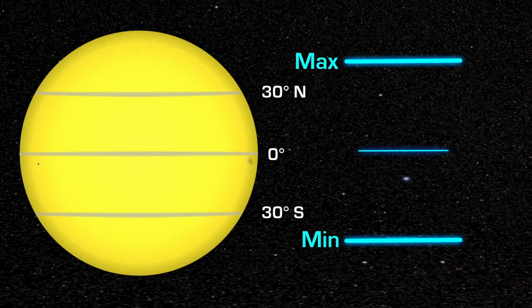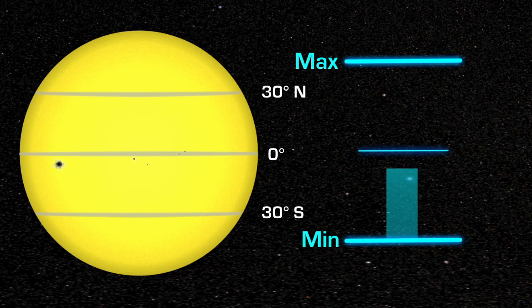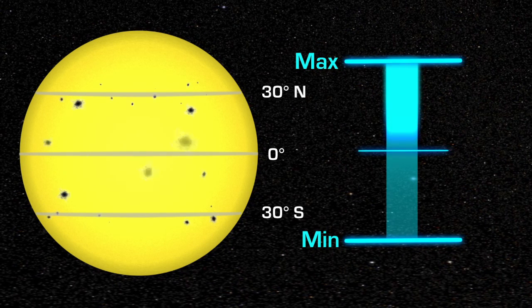At solar minimum, there are sometimes no sunspots to observe. At solar maximum, there can be many at the same time.